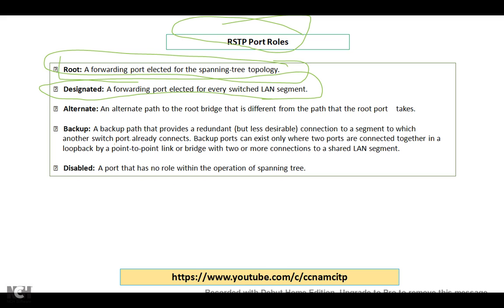A backup port provides a redundant but less desirable connection to a segment to which another switch port is already connected. Backup ports can exist only where two ports are connected together in a loopback by a point-to-point link, or a bridge with two or more connections to a shared segment. A disabled port has no role within the operation of the spanning tree.